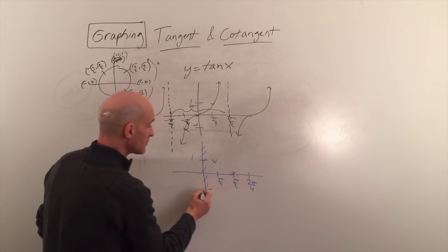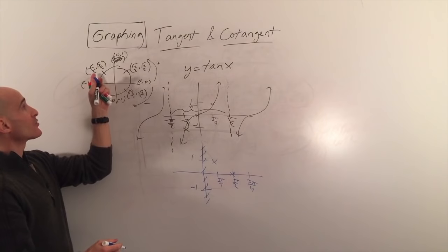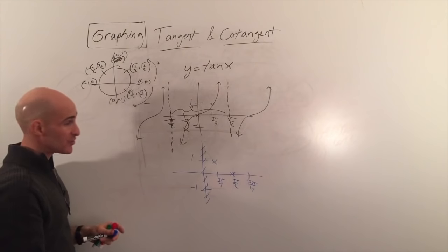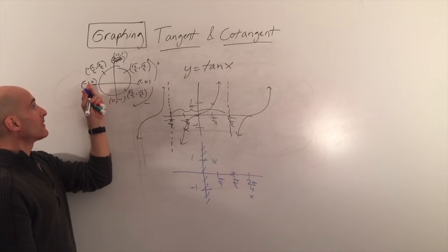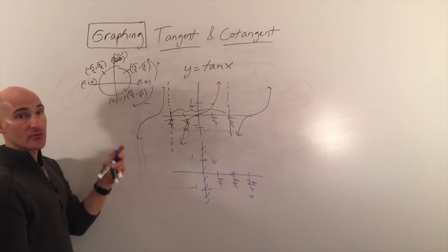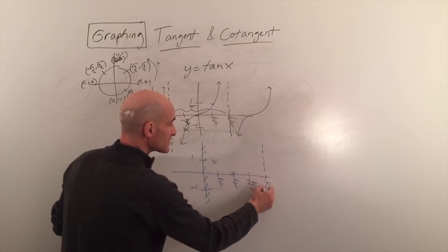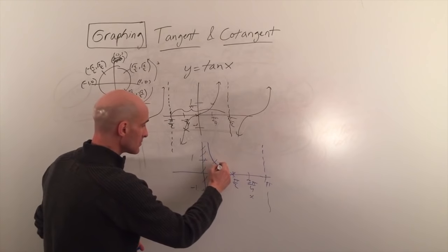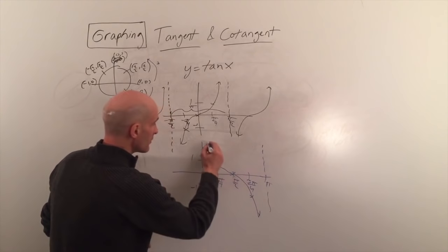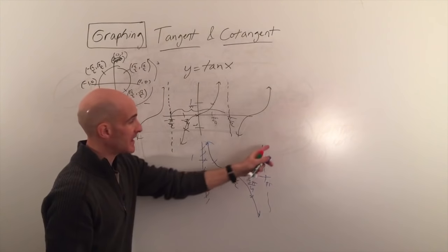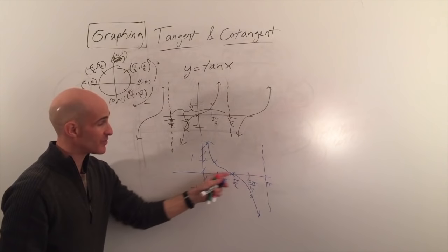At pi over 2, x over y is 0 over 1, which equals 0. At 3 pi over 4, x over y is negative square root 2 over 2 divided by positive square root 2 over 2, giving negative 1. At pi, x over y is negative 1 over 0 — undefined — giving another vertical asymptote. The cotangent graph repeats every pi, so its period is also pi.